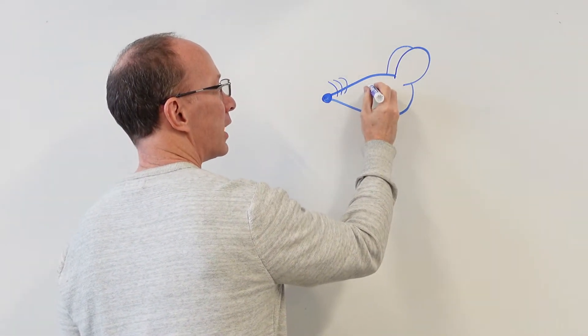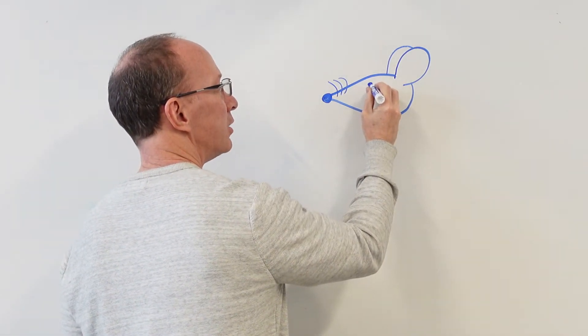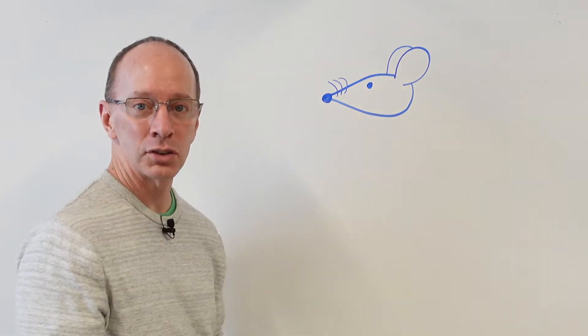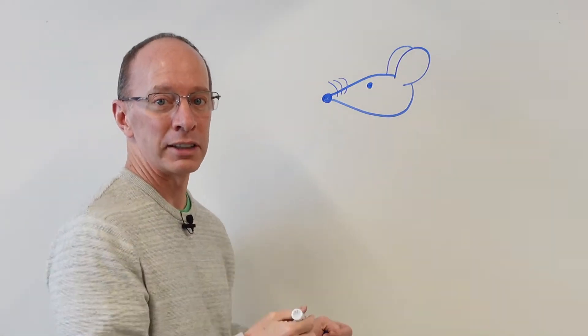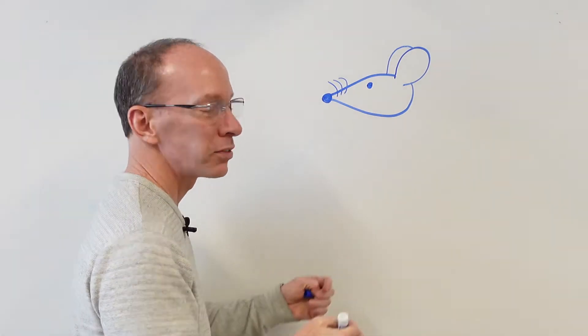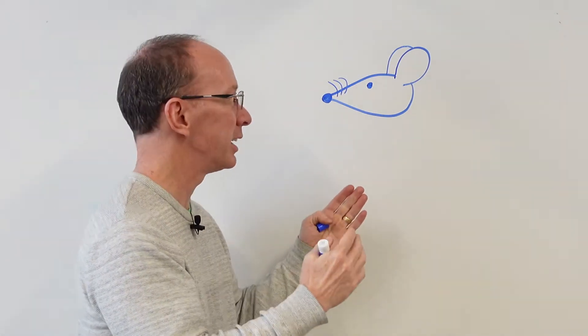Now we're going to go ahead and draw the eyes. And the eye, you can have an eye just like this. Or later on, I'll show you how to make some cartoon eyes. So this is our basic shape of our mouse head.